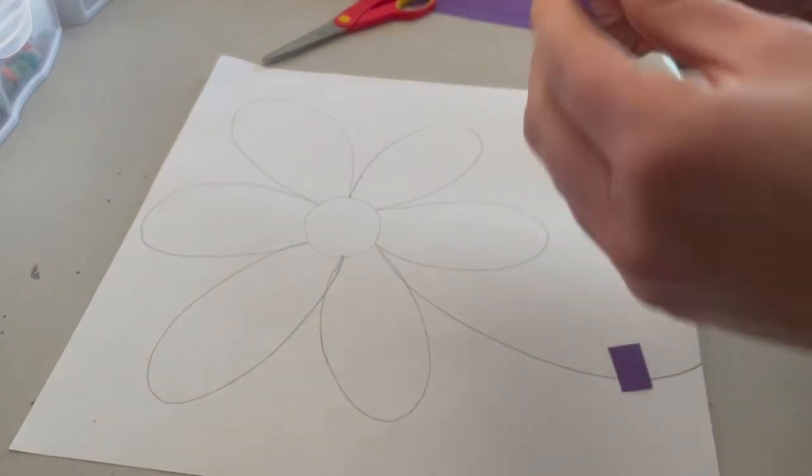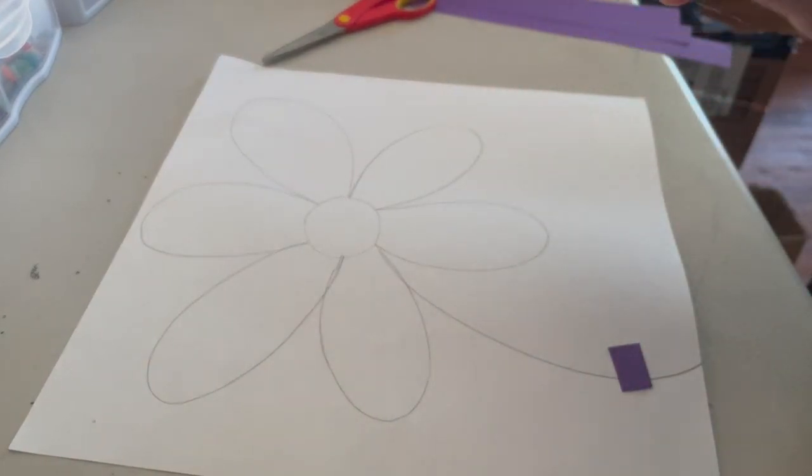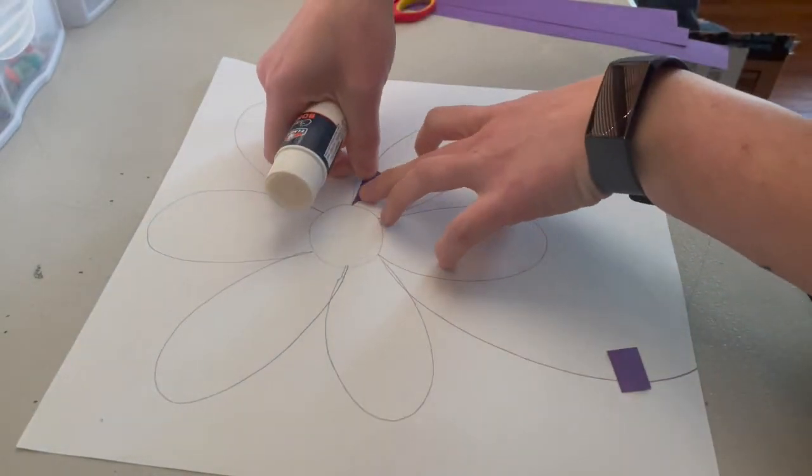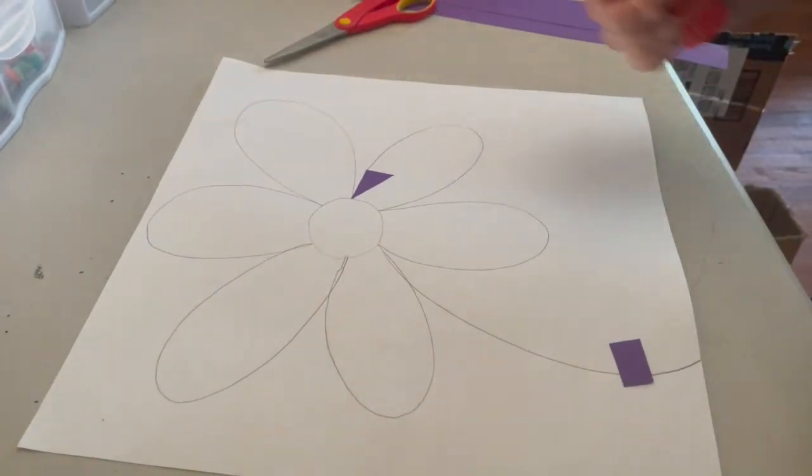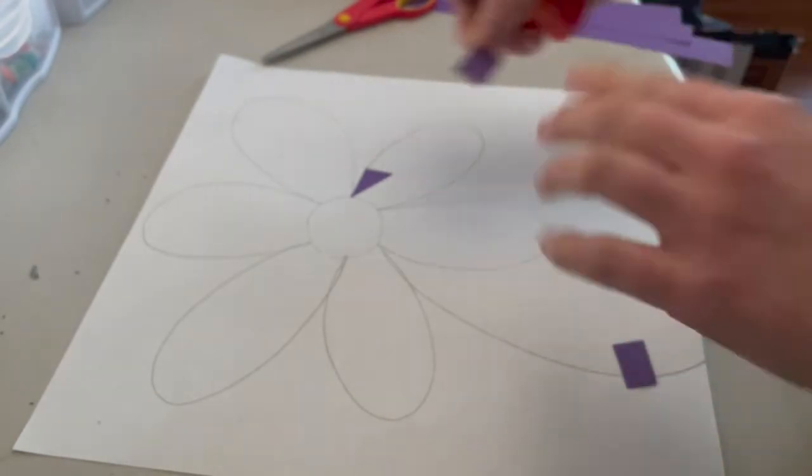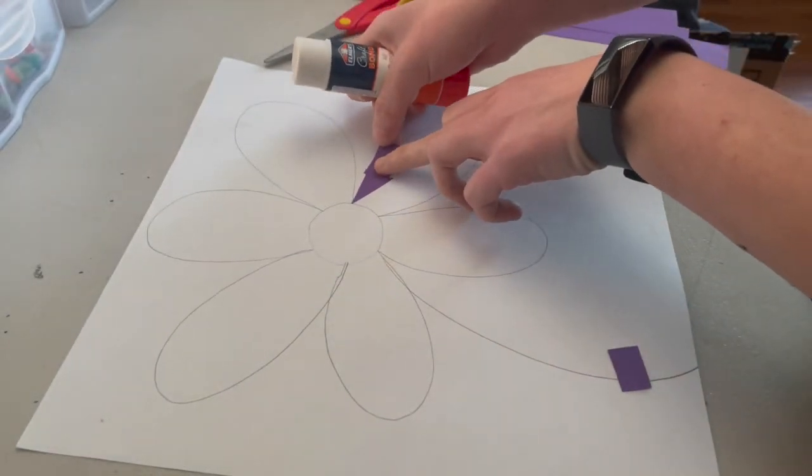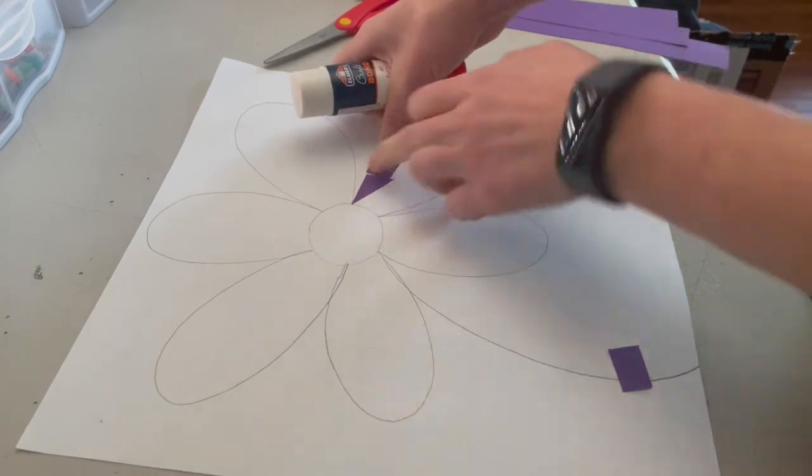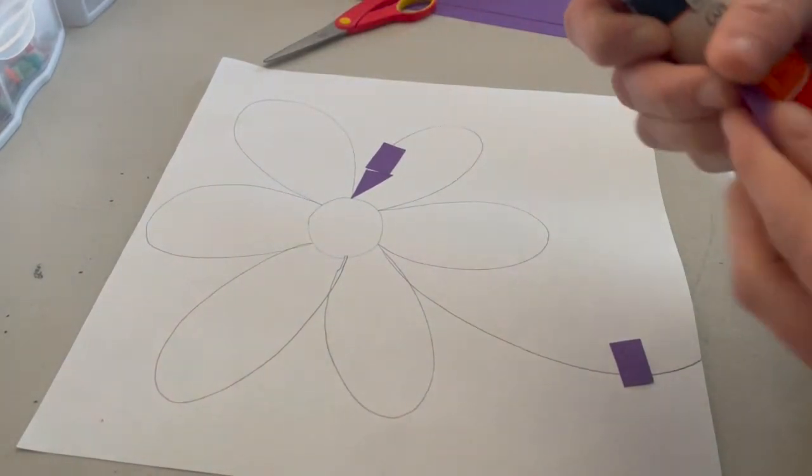Once you have a bunch of tiny pieces, you can start gluing them to your paper to make a mosaic. You're going to put glue on each piece and we're going to do the petals first. You're going to go around the line that you drew and on the inside. We're going to fill in each spot with the pieces that we cut.